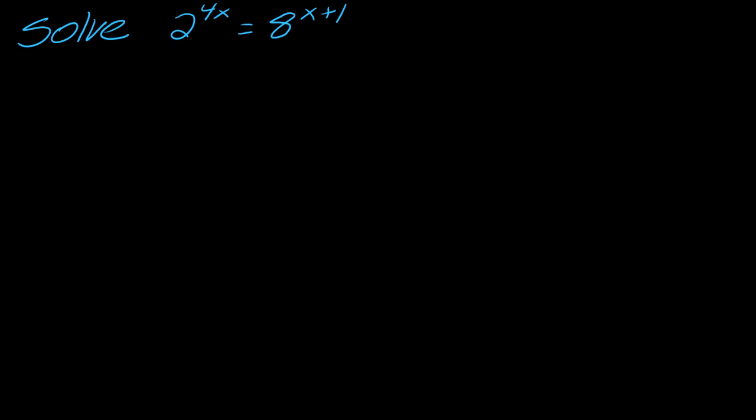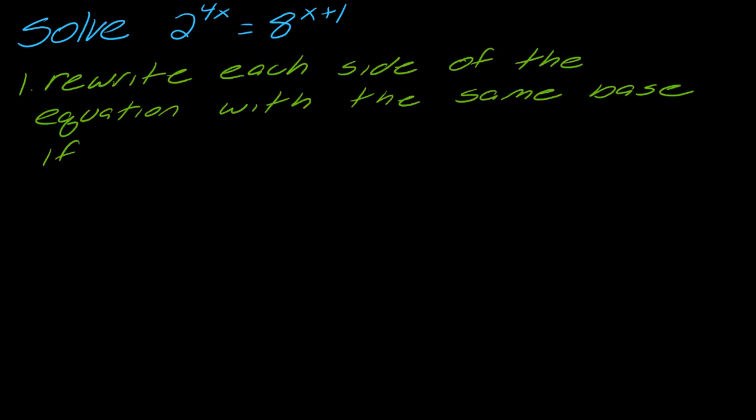So I've got this example: 2 to the 4x equals 8 to the x plus 1. What I'm going to do is write out general directions for the approach for these, and then we'll talk about how that applies to this problem. The first thing we want to do is rewrite each side of the equation with the same base if possible. I'll show you what I mean for this problem.